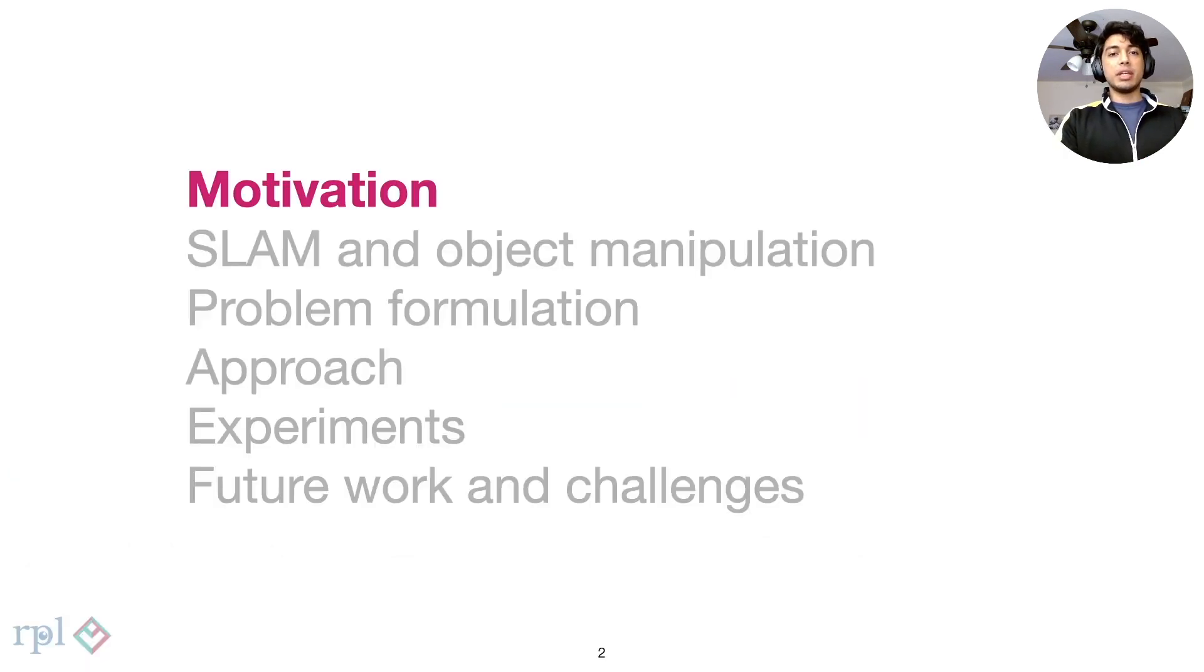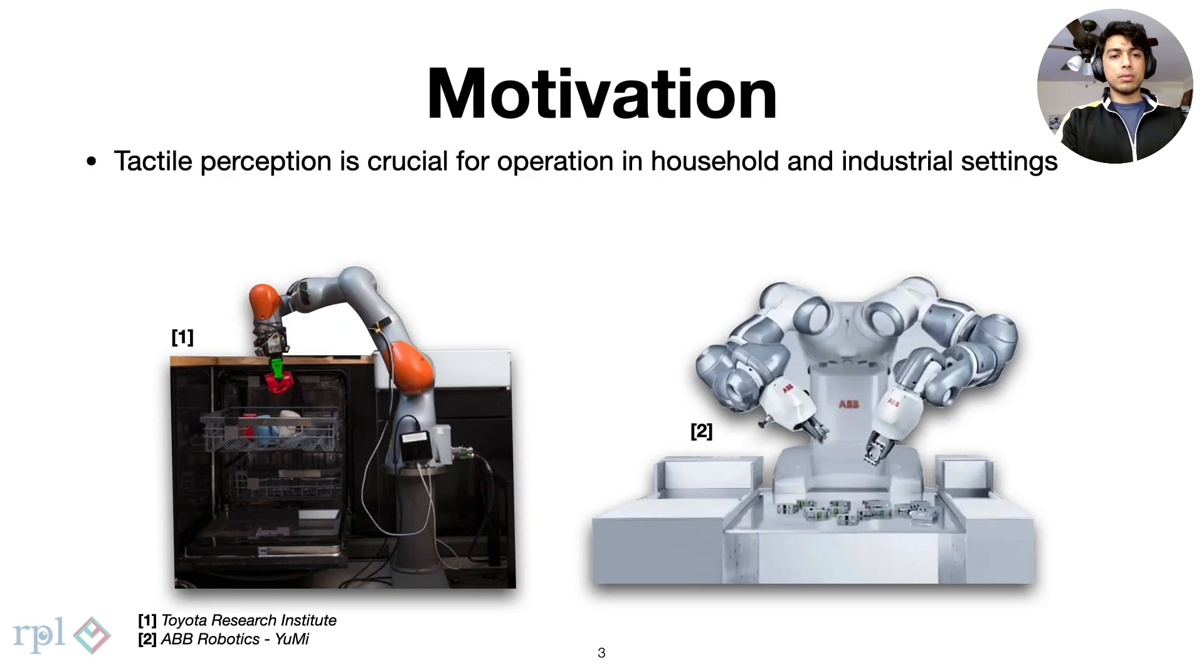We begin by motivating the problem. Perception at the distal end of a robot arm is crucial in unstructured environments. Making sense of these signals is important for both household robots operating in cluttered kitchens and those working with parts in factories.